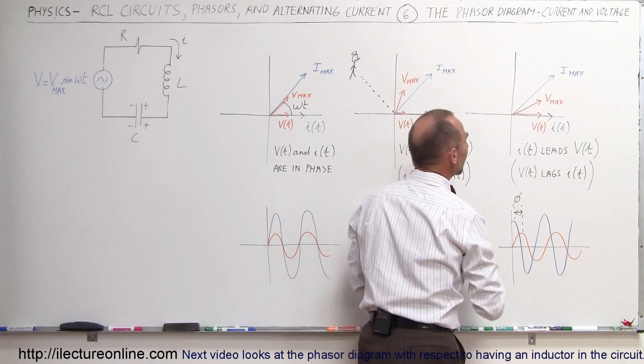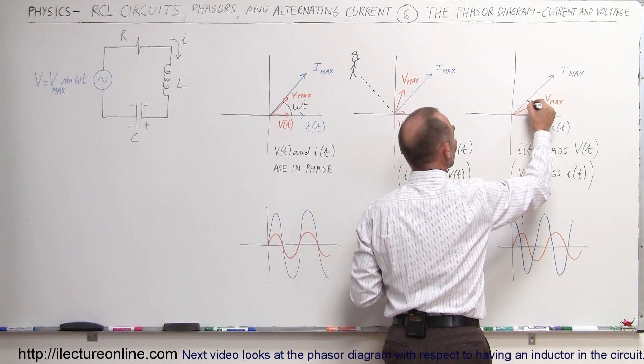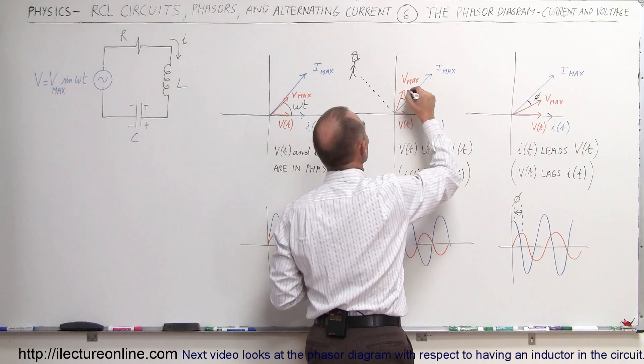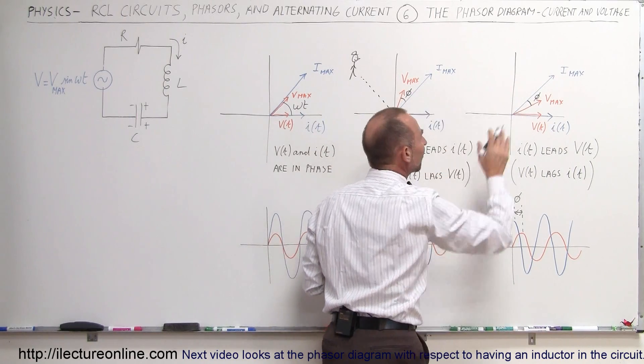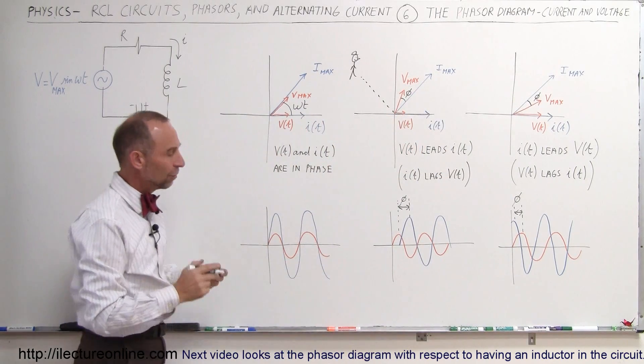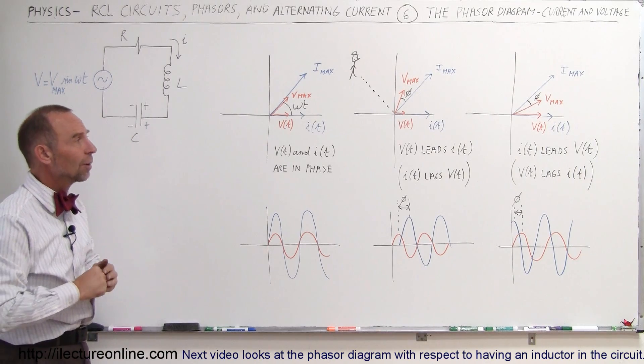And there's the phase difference between them, and so you can say that the phase difference between them can be found by simply finding this angle between the two right there. That's called the phase difference between the current and the voltage, and that's why it's so interesting to look at phasor diagrams.